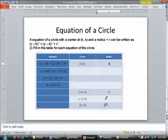On the second equation we have x plus 4 squared plus y minus 1 squared is equal to 9.